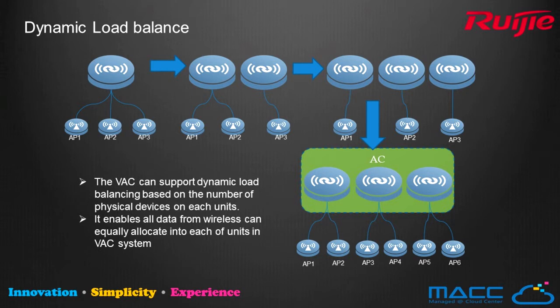The next advanced feature is dynamic load balancing. VAC technology can achieve real-time dynamic load balance, where each virtual member processes both the control plane and data plane simultaneously. For example, if you have 3 APs already online on one physical hardware AC, by adding more hardware ACs into virtualization, control and data forwarding will be balanced to each virtual member accordingly. Only one logical AC needs to be configured and maintained in this network.